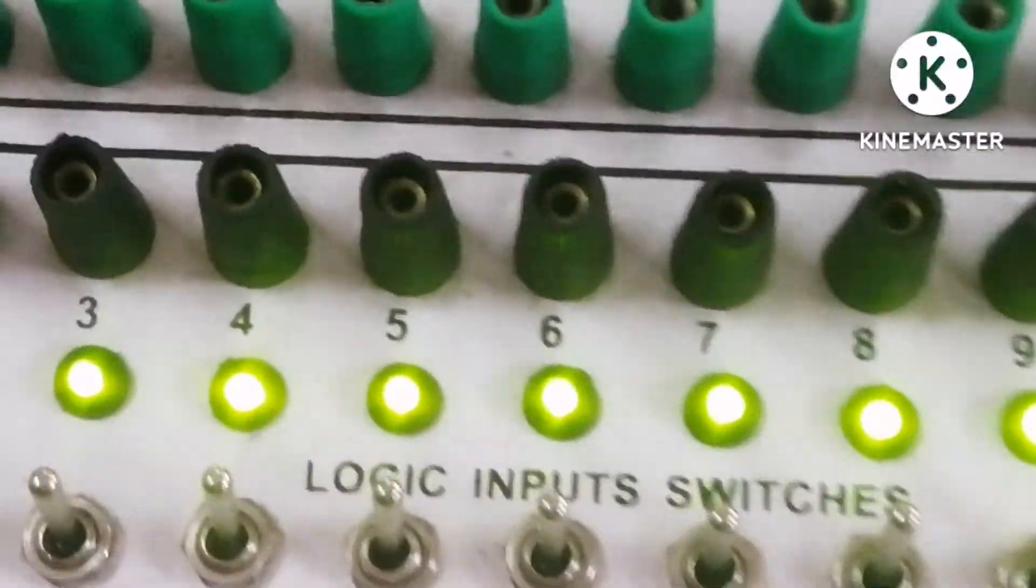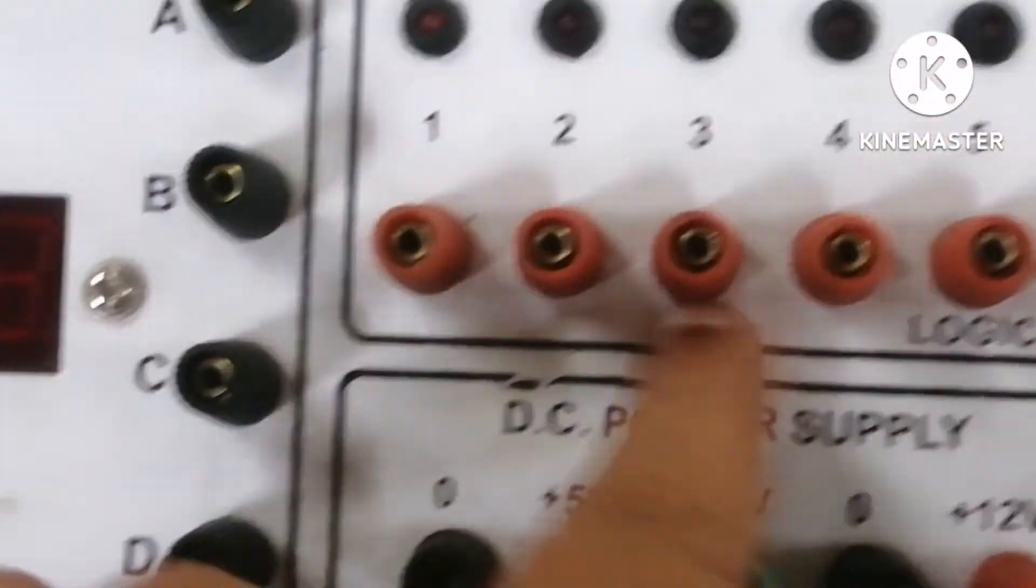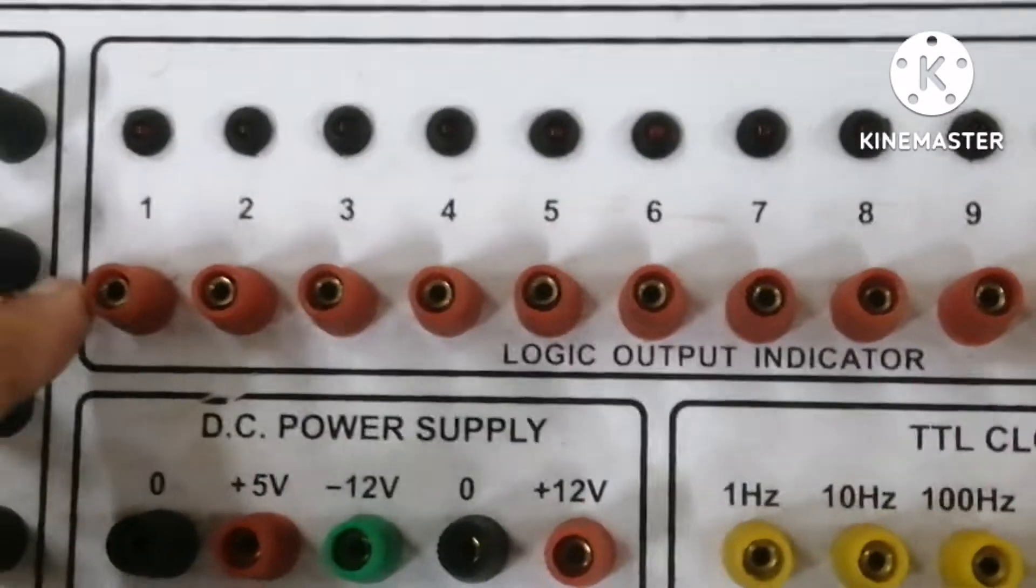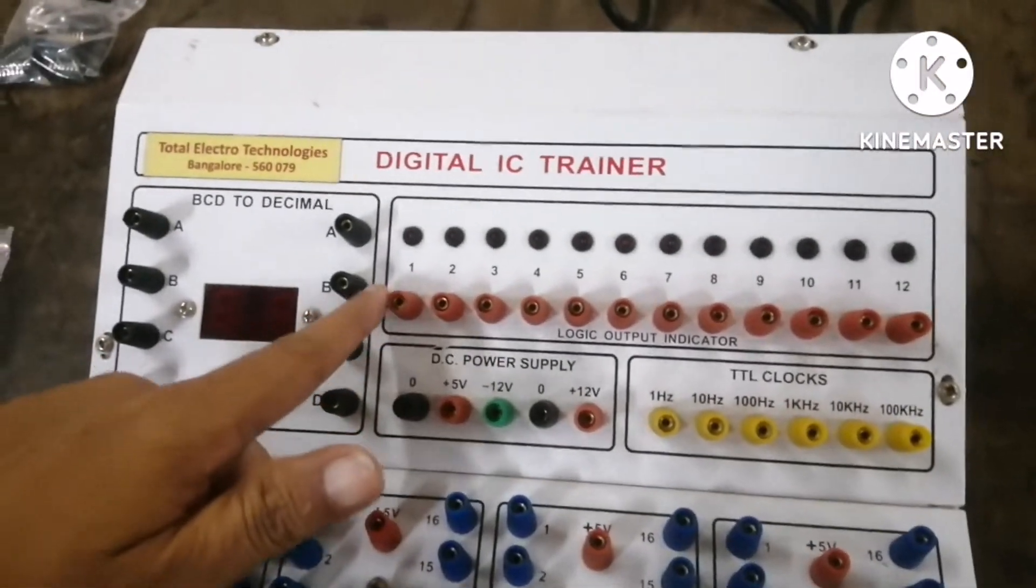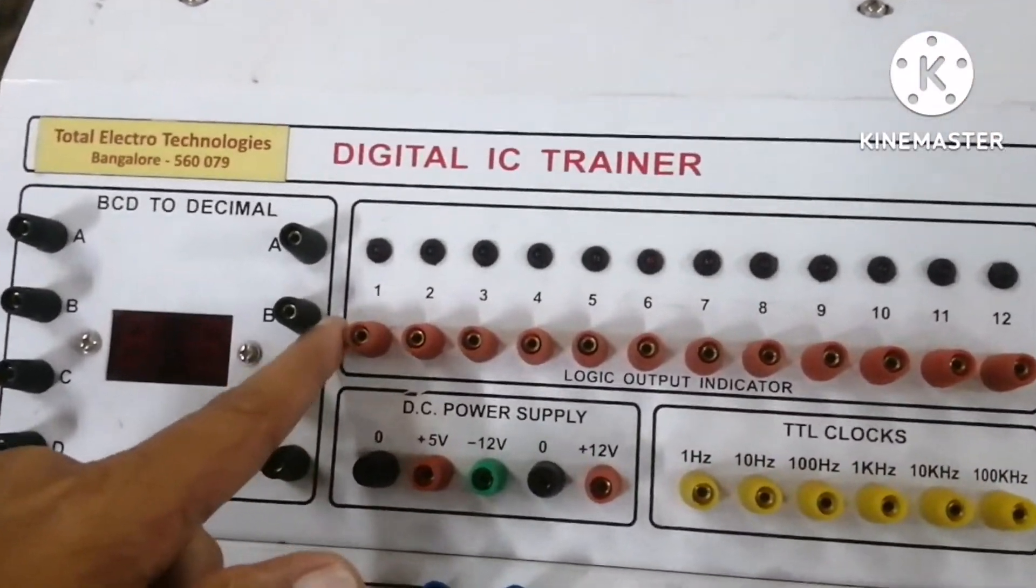So at the top of this one, there are 12 indicators. They indicate the output that we can see.